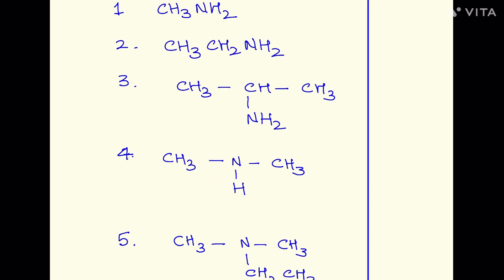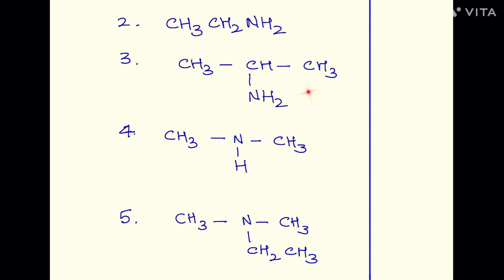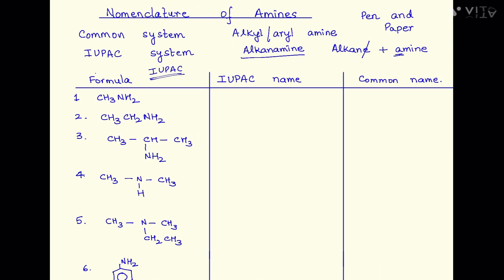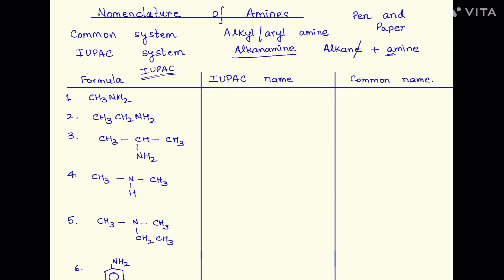The third and the fourth structure differ in the fact that in the third, it is the hydrogen from the carbon which has been replaced by the NH2 group. Whereas in the fourth case, it is the hydrogen of the nitrogen which has been replaced by the methyl group. So how are you going to name this? Remember, this is not one complete chain of carbon atoms — it is the carbon atoms which have to constitute the longest chain.